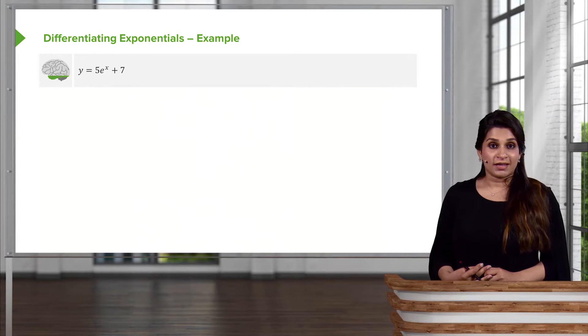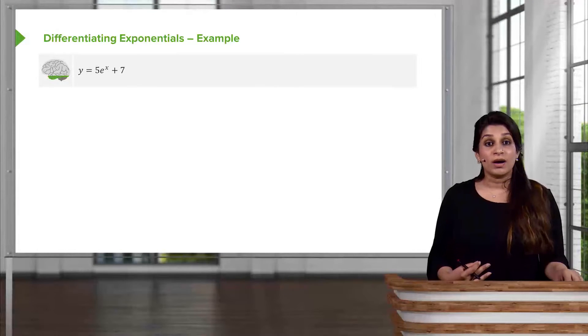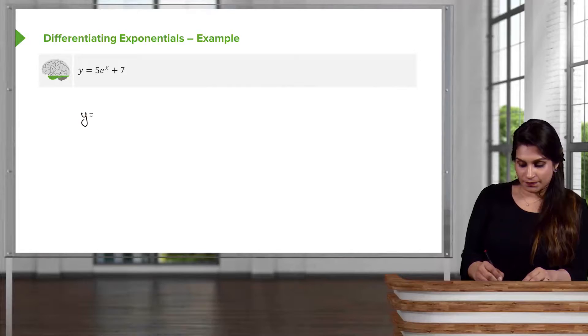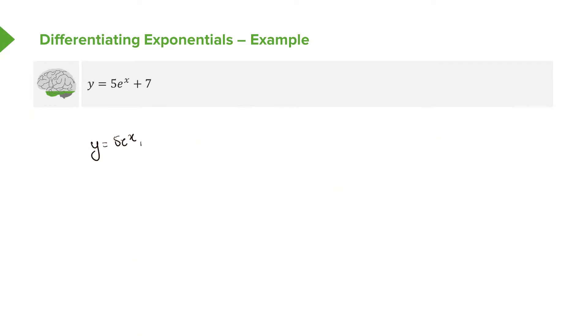So using the rules that we've just looked at, let's do our first example. We have y = 5e^x + 7. Now this is a fairly straightforward question. All we have to do is differentiate each term separately. So if I was to do dy/dx, remember the 5 is just a constant, so if it's multiplying with a function, it doesn't change. We now need to differentiate e^x. And if you look back, you'll see that e^x differentiates to e^x. So this doesn't change. And the +7 is a constant, so that just disappears. So simply put, the differential of 5e^x + 7 is just 5e^x.